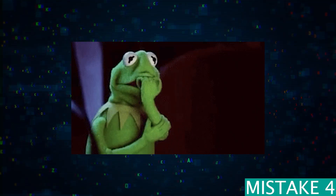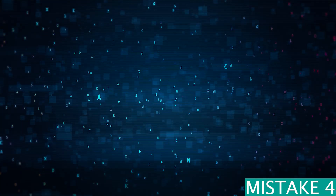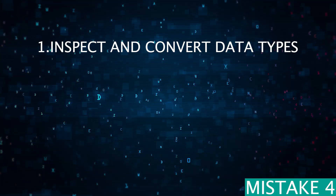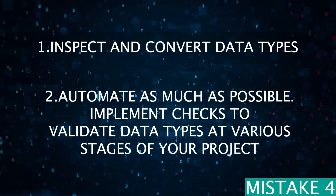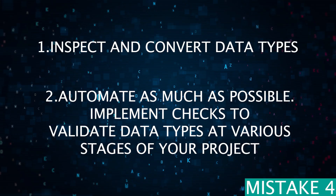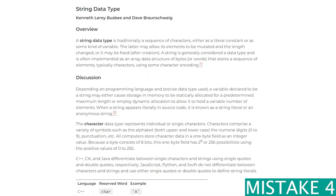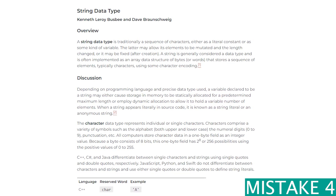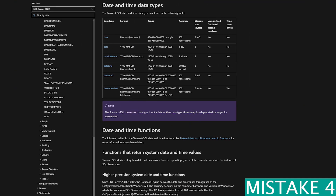It isn't just the format you need to worry about — you also have to worry about the data type itself. This is a common mistake because not everyone checks the data type until it's too late. The solution is simple: inspect, cast, and convert your data types. A pro tip: automate as much as possible by implementing checks to validate data types at various stages of your project. For example, if a datetime variable like order date is stored as a string, you'll need to cast it as a datetime type to enable your calculations and analysis.